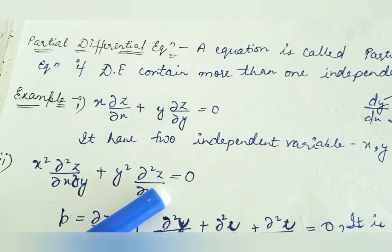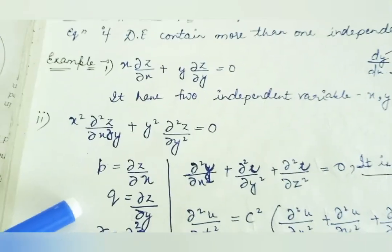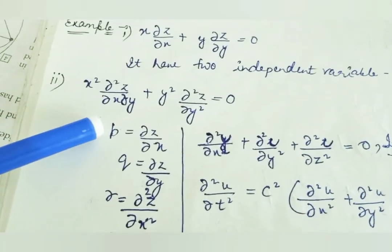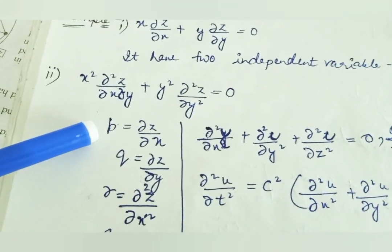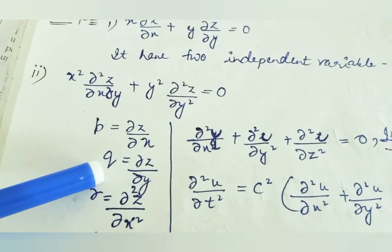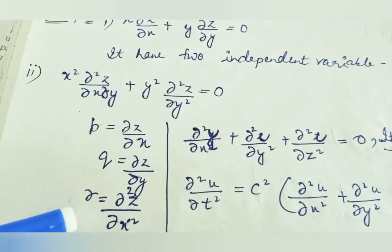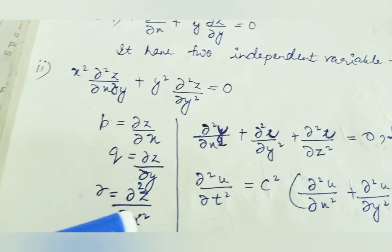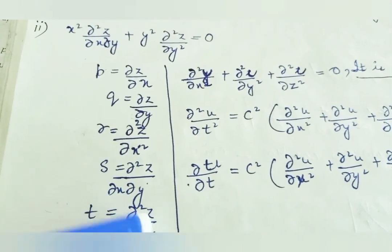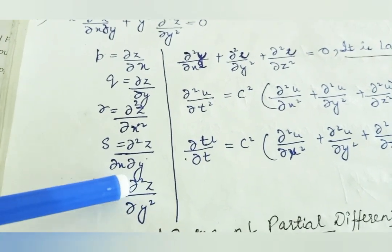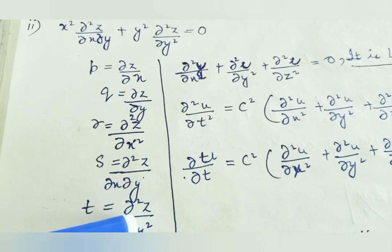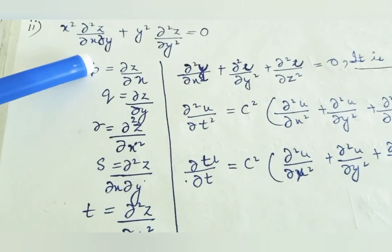This is order 2. What is the symbol? The symbol is p = ∂z/∂x, then ∂z/∂y, then ∂²z/∂x², then ∂²z/∂x∂y, and ∂²z/∂t². This is the symbolic notation used for partial differential equations.